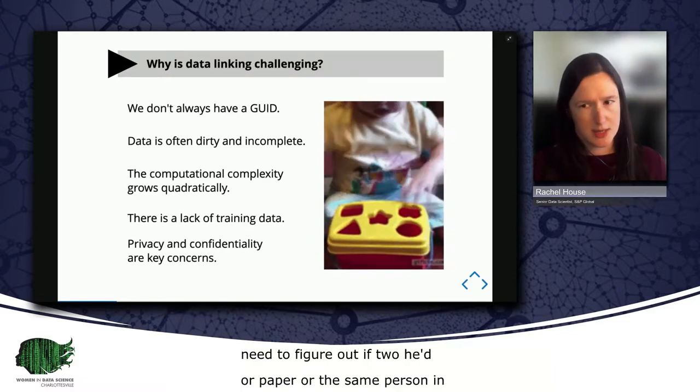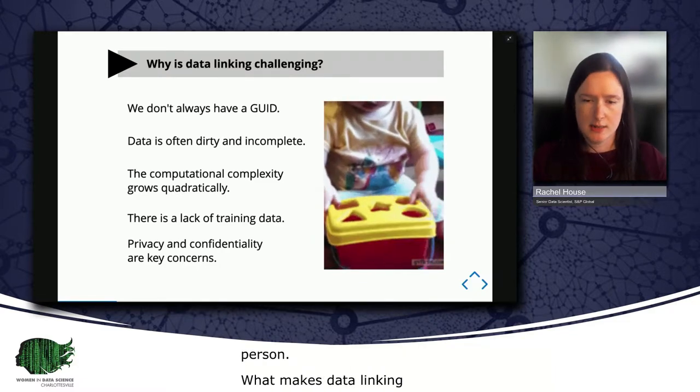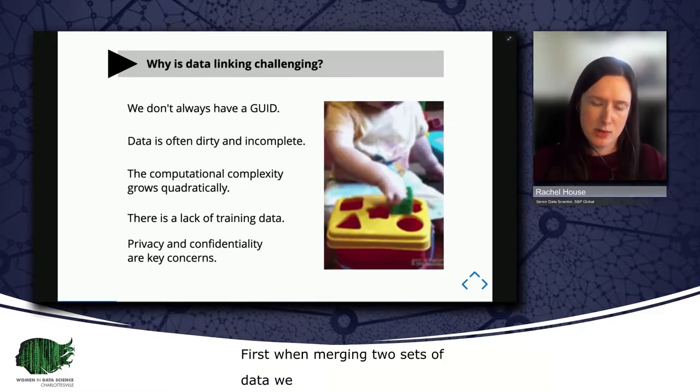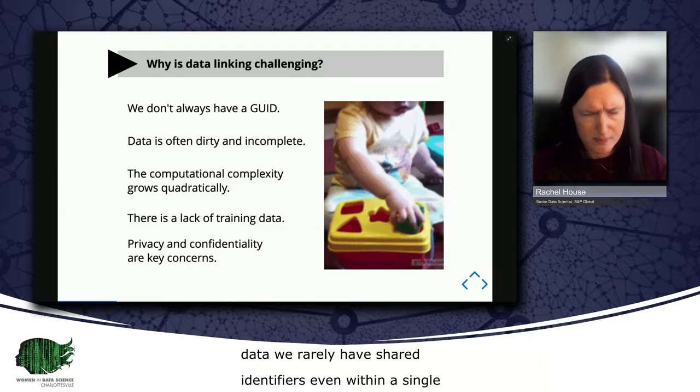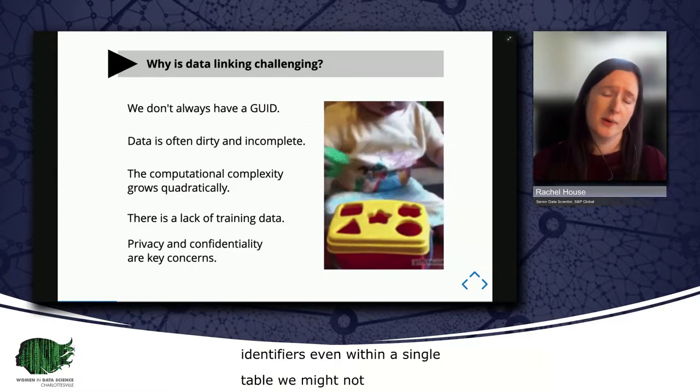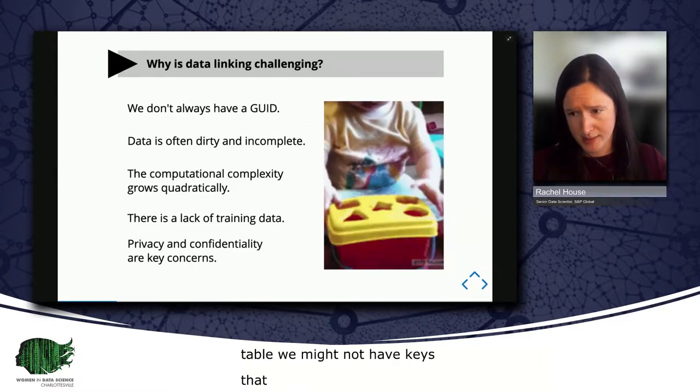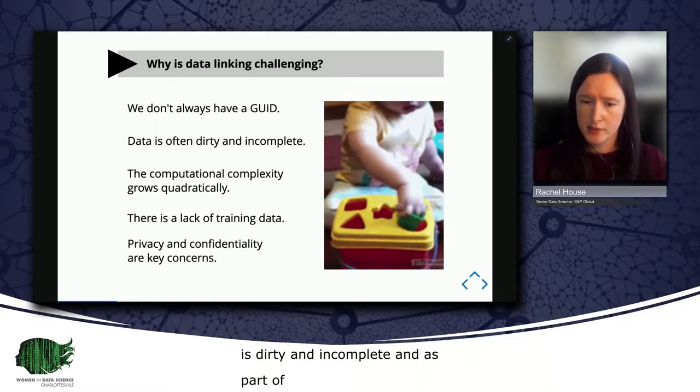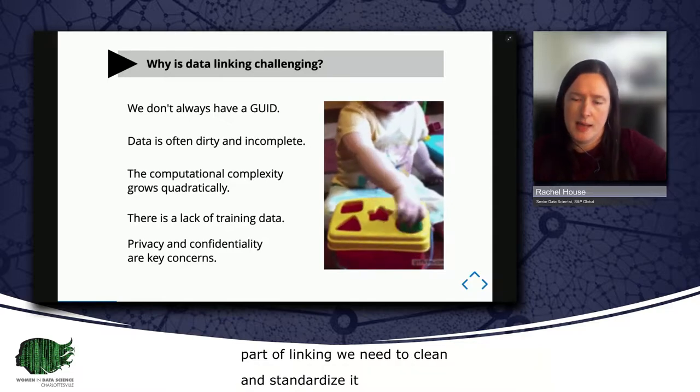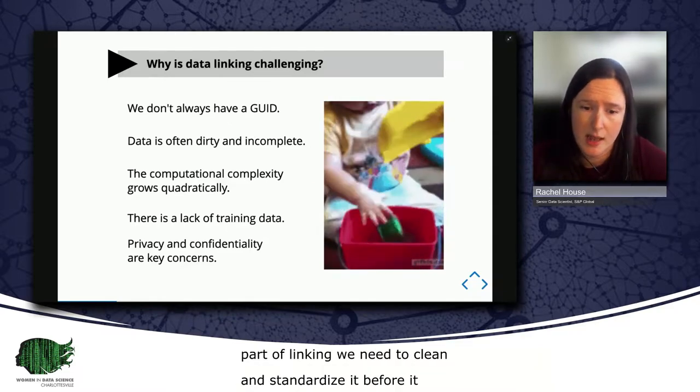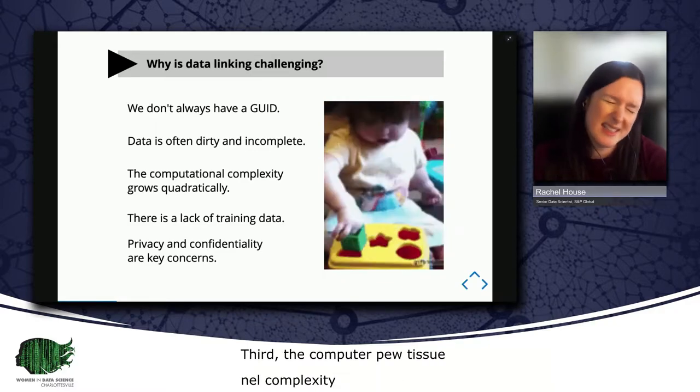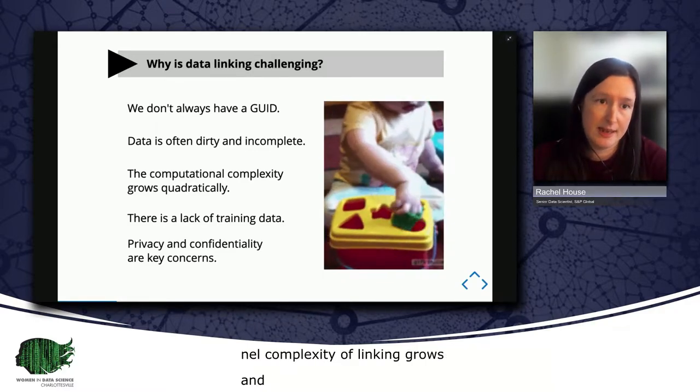Now, what makes data linking challenging? First, when merging two sets of data, we rarely have shared identifiers. Even within a single table, we might not have keys that uniquely identify elements. Secondly, in the real world, data is dirty and incomplete. And as part of linking, we need to clean and standardize it before it can be linked. Third, the computational complexity of linking grows quadratically. And though compute power has exploded over the last few decades, it's still not enough to brute force your way through linking large datasets.